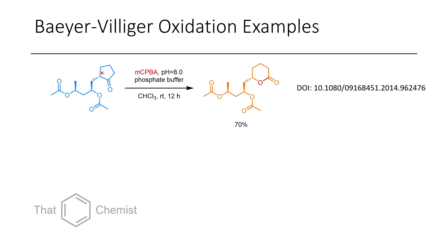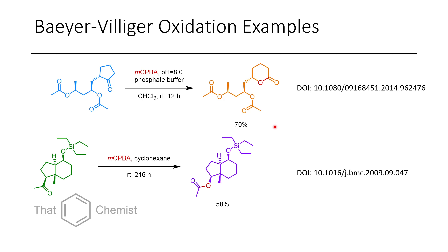In the next case, there's no particularly activated position; the reaction takes 12 hours in chloroform with a phosphate buffer. You can see the tertiary position is more reactive than the secondary, and only one product is obtained. In the final case, there are no stabilizing factors whatsoever, making it a very long reaction — 216 hours — requiring a different solvent. Because the tertiary position is more reactive than methyl, the methyl does not shift, and we form the ester at that tertiary position.